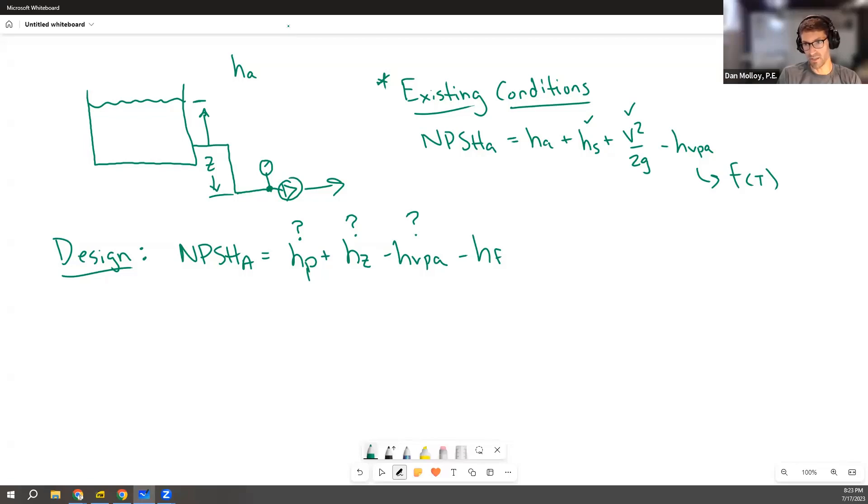And then lastly, the losses. How come we didn't have to consider the losses when we're doing existing conditions? Well, when we're doing existing conditions, we measured the pressure, both the static pressure and the velocity pressure, immediately at the inlet to the pump. So there's no losses to consider because there's no length between that point and the pump inlet or negligible length.